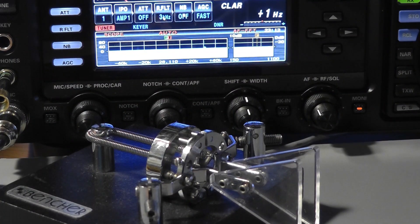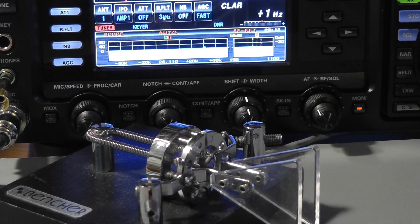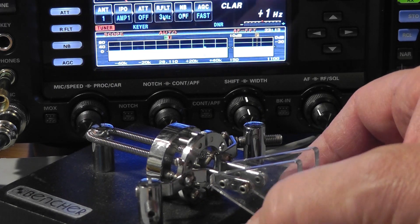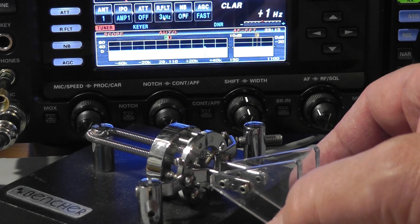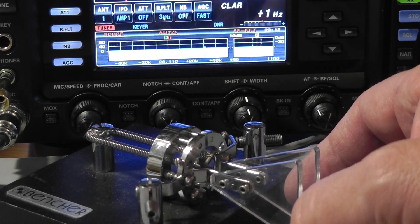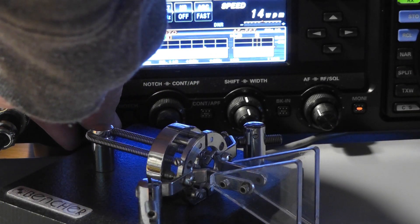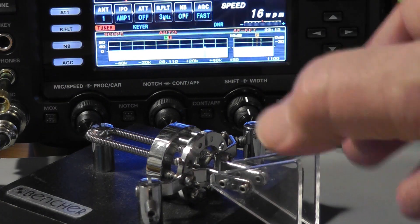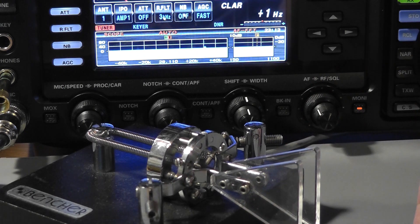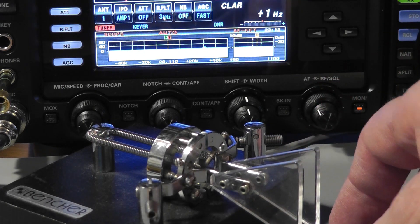It used to be that when code was sent at five words per minute, the characters were long and drawn-out. But the so-called Farnsworth method sends the characters at about 18 words per minute but puts long spaces in between the letters so the equivalent rate is slower. With the long, drawn-out letters, your brain is tempted to say, oh, that's a dot followed by a dash, which is the letter A. With the Farnsworth method, you hear da-da and recognize it as an A.